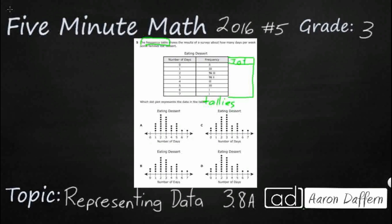The reason we want to do that is simply because with our frequency table, we want to make sure we can quickly see what these hash marks are. So we know two hash marks is going to be two. On day zero we had two. On day one, you see we've got one, two, three, four.